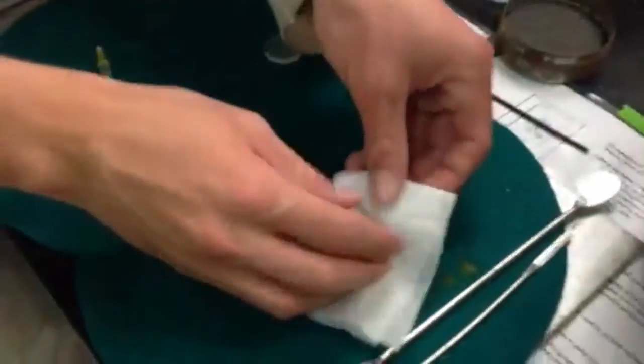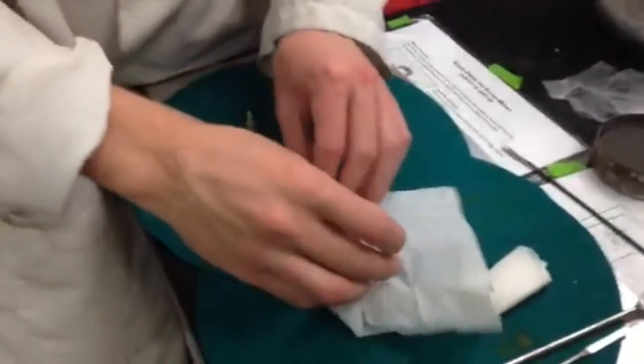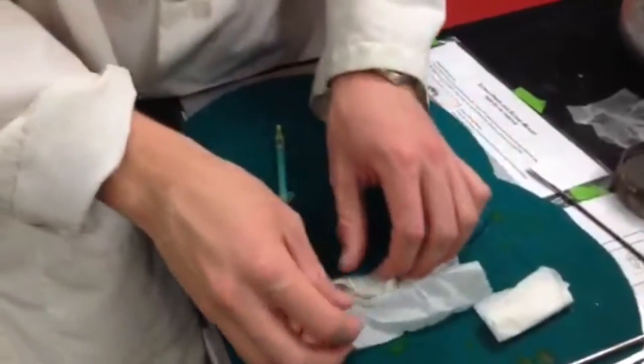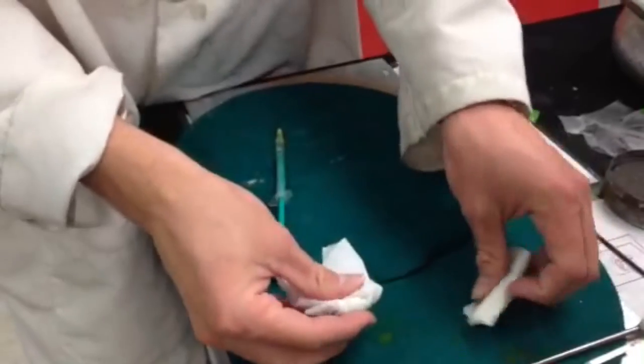Next, you're going to take the now-cleaned salt disks and wrap them up in the protective tissue paper. After they're both wrapped up, you're going to place them carefully back into the desiccator and close the lid.